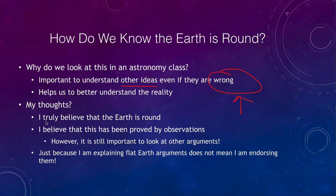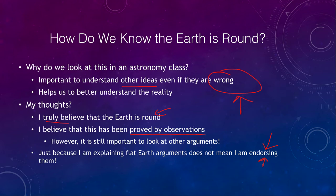I believe that yes, the earth is round — not a flat disk in any way — and this has been proved by many observations including NASA flights. I am not in any way endorsing the arguments of the Flat Earth Society. I am simply putting forward the way they explain things and then showing the methods that astronomers say are the correct observations — what NASA has given us and what observations here on earth explain. I want you to think about the different arguments and be able to refute them, rather than just saying this is ridiculous and moving on.